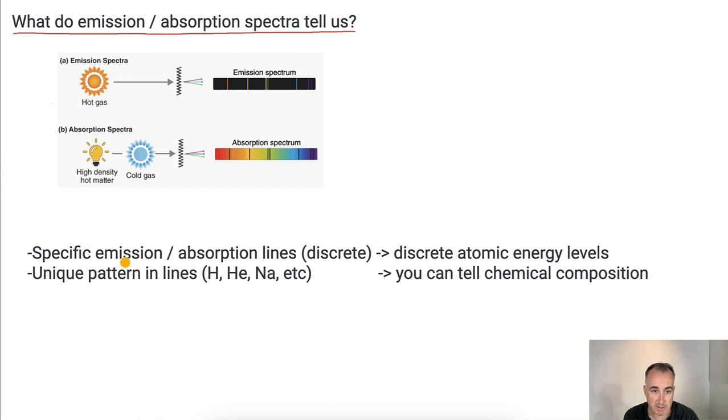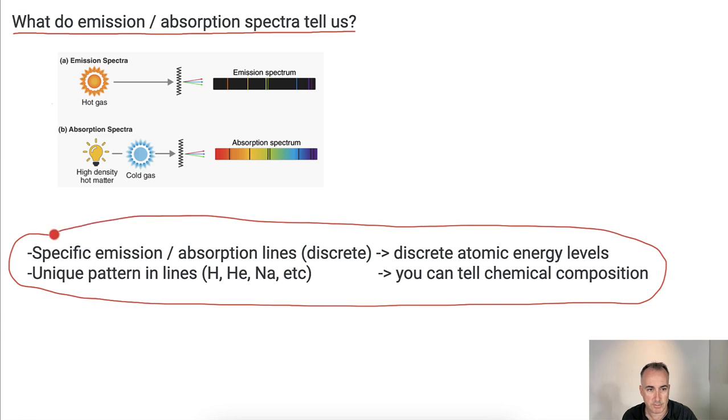These specific emission or absorption lines, these discrete ones, that tells you about discrete atomic energy levels. That's true. But also the fact that the unique pattern, the fact that each element has its own unique signature, well, that tells you about chemical composition. That tells you what something's made of.